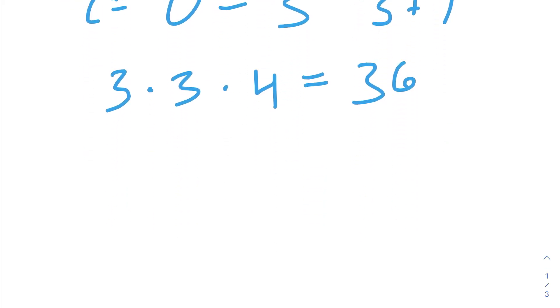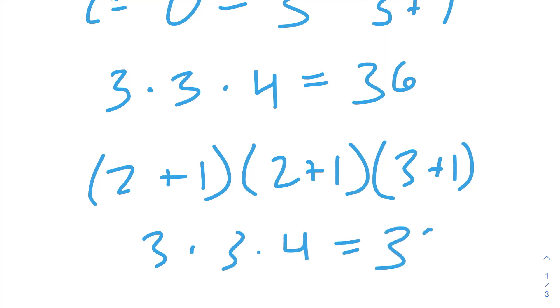So, that means that we have 3 different choices for A. We'll just write it like this. 2 plus 1 different choices for A for how many 2's there are going to be. 2 plus 1 choices for B, and 3 plus 1 choices for C. If we add them all up, we get 3 times 3 times 4, and we get our same answer.